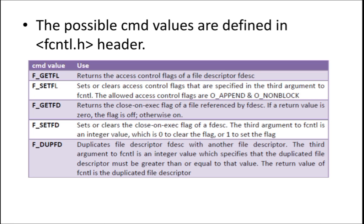The last one is DUPFD — duplication. Duplication means it is going to duplicate the file descriptor with another file descriptor, creating a copying operation. You can use the duplicated file descriptor along with the original file descriptor. The third argument to FCNTL is an integer value which specifies that the duplicate file descriptor must be greater than or equal to that value. The duplicated file descriptor is created with the condition that its value must be greater than or equal to the original value. If executed properly, this returns the duplicated file descriptor.